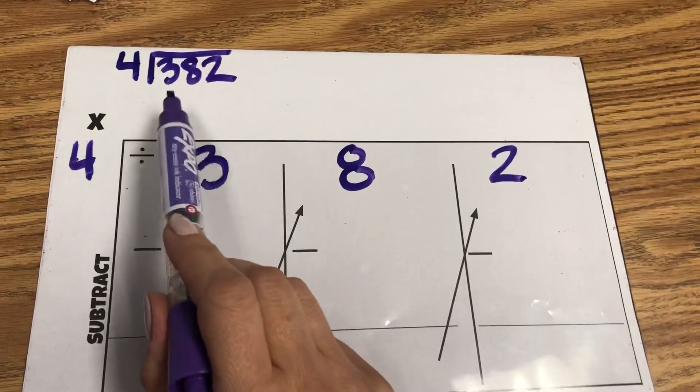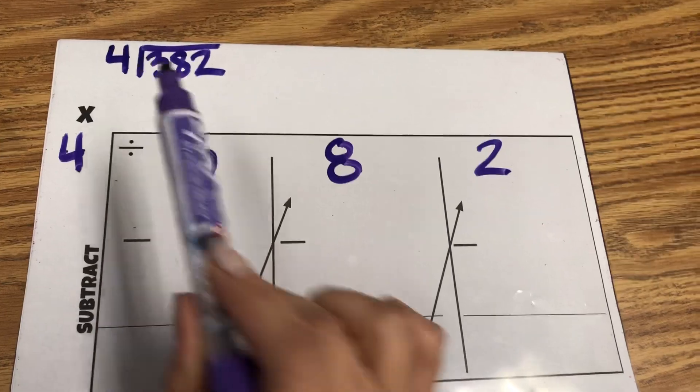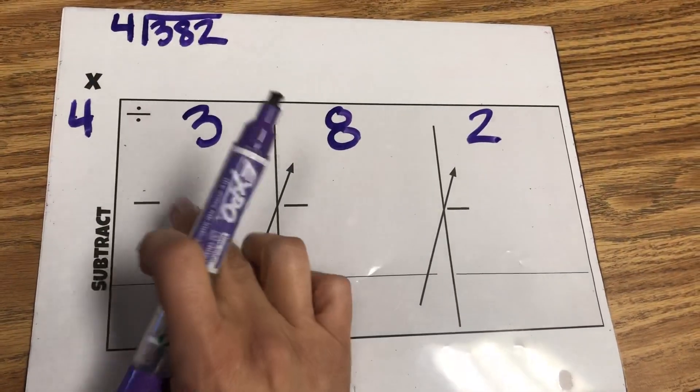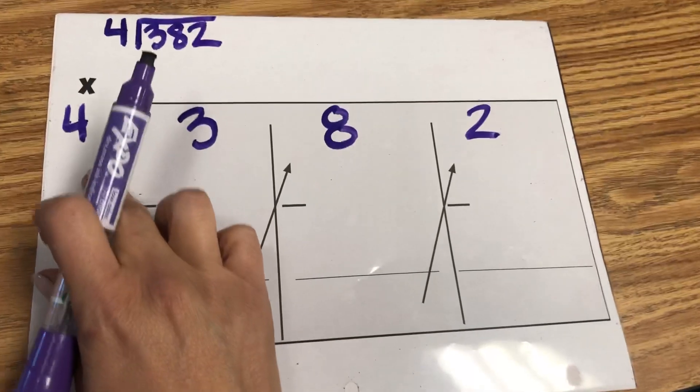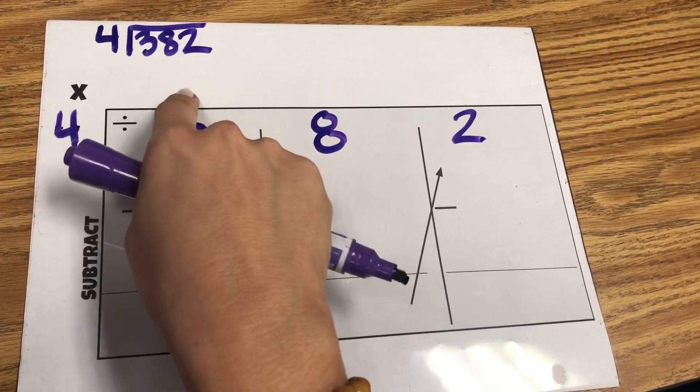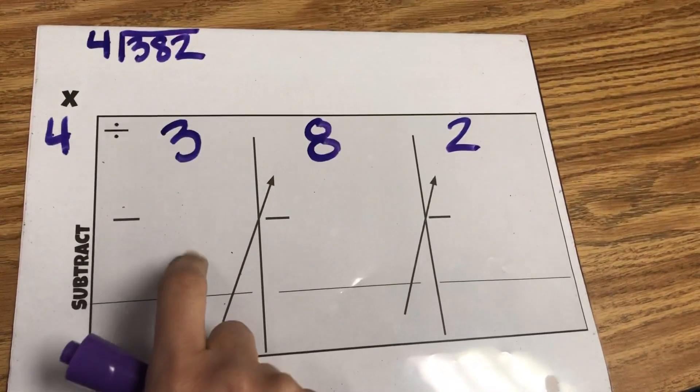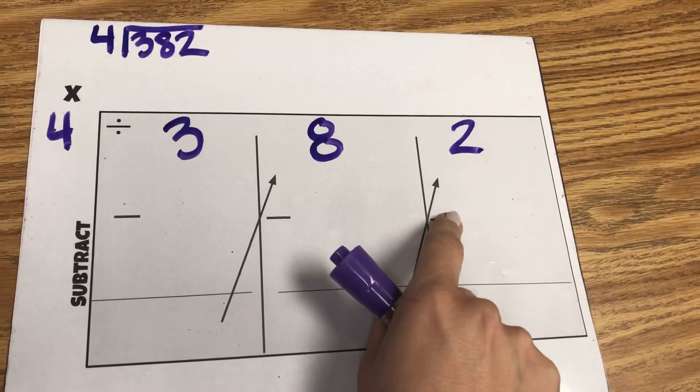This problem is 382 divided by 4. The number goes in the box like this: 382 divided by 4. I put the multiplication sign up here to remind them that whatever numbers are on top they're going to multiply, and then whatever numbers are down here they will subtract.